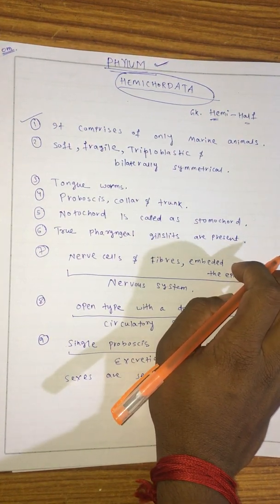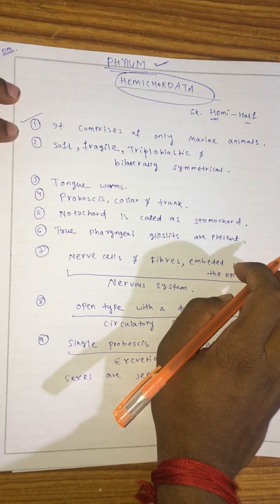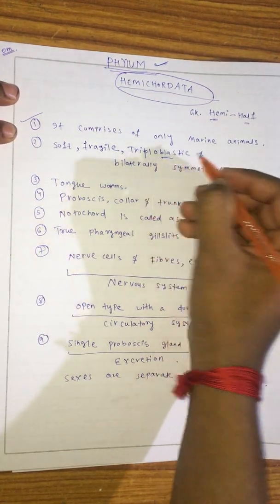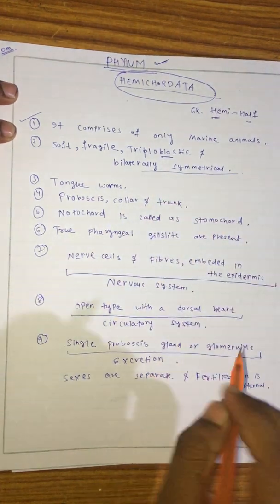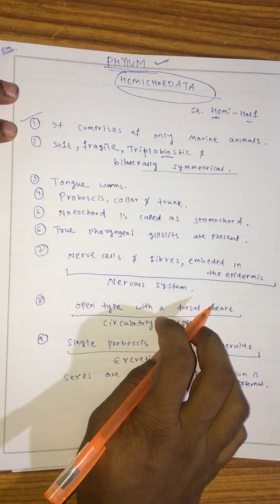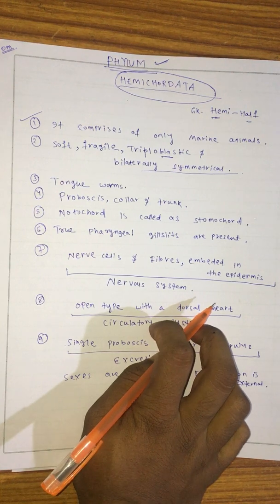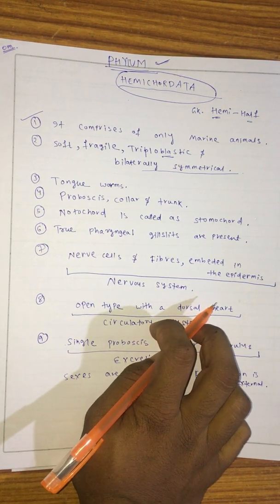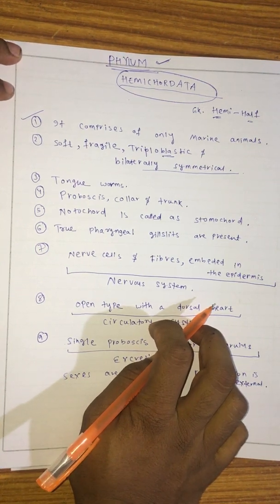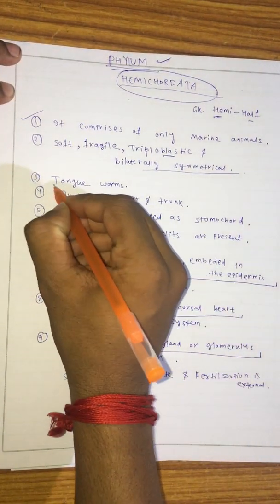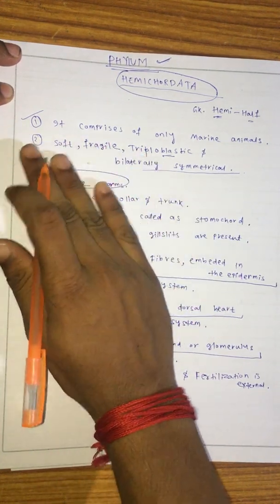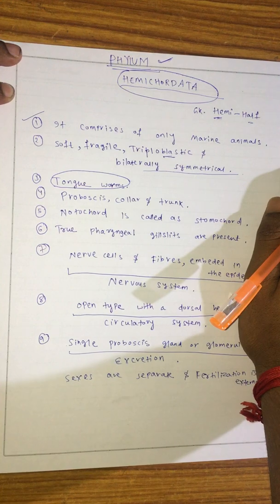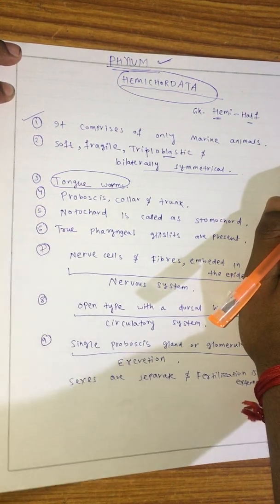The body is soft, fragile, triploblastic, and bilaterally symmetrical in nature. The animals which come under Phylum Hemichordata are commonly called tongue worms.